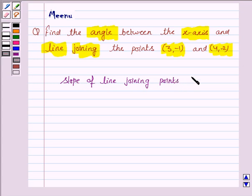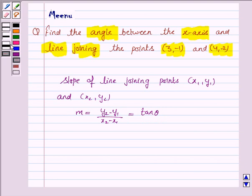The slope of a line joining points (x₁,y₁) and (x₂,y₂) is given by (y₂-y₁)/(x₂-x₁). This is denoted by m and is equal to tan θ, where θ is the angle made by the line with the positive direction of the x-axis.